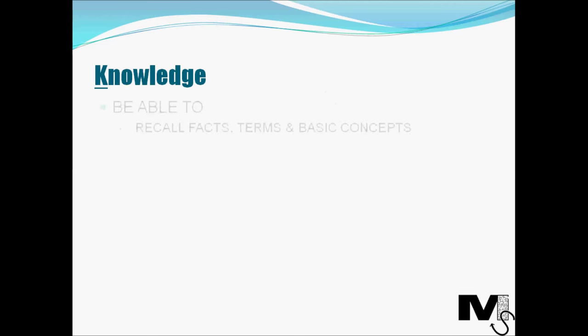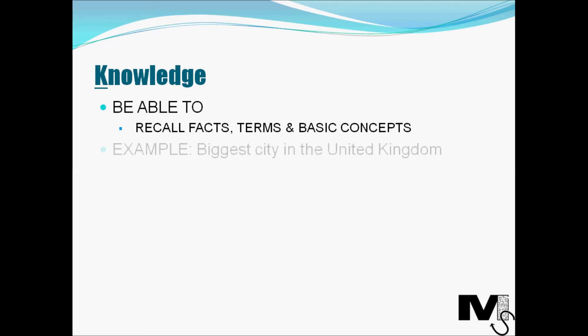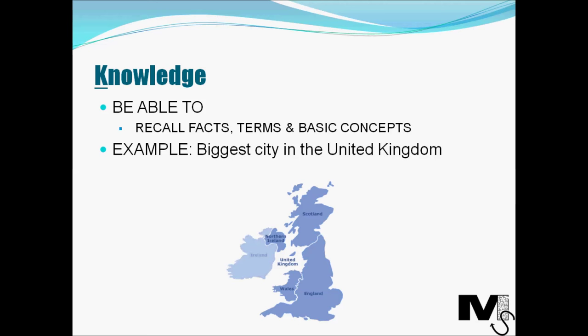Knowledge, the very basic level, is the very first level of the taxonomy. Here you're only expected to do basic things like recall facts, terms, and the basic concepts relating to the subject of your interest. For example, if the subject of your interest is geography, for instance, geography of the United Kingdom, then you'll be expected to know what the biggest city in the United Kingdom is. Just knowing that would enable you to be at this level of the taxonomy.